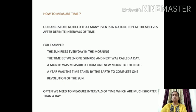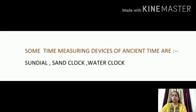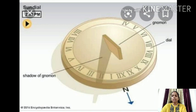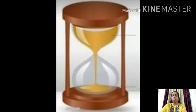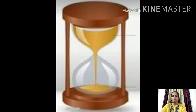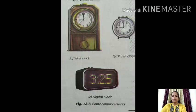But often we need to measure intervals of time which are much shorter than a day. For this purpose, a number of time measuring devices were invented in ancient times — some of them were sand dial, sand clock, and water clock. However, these ancient devices could not be used for measuring small time intervals such as minutes and seconds. The measurement of small time intervals became possible when clocks were discovered.